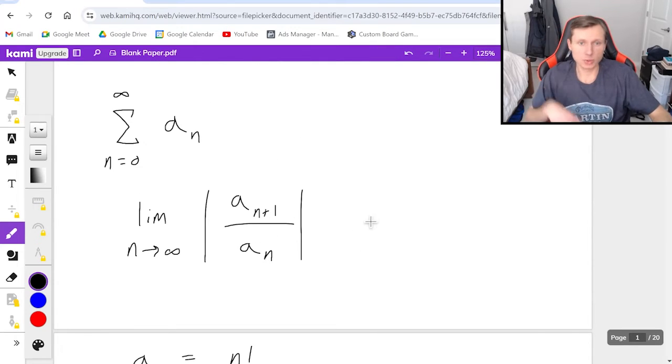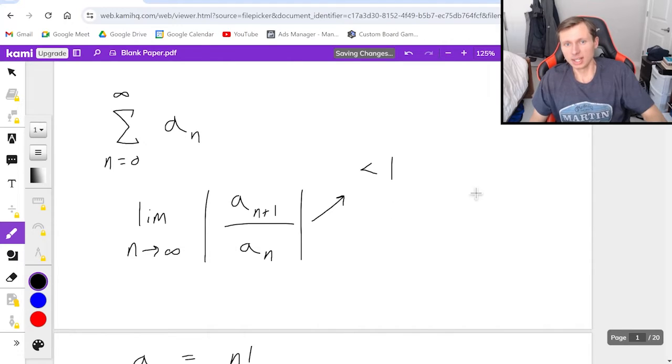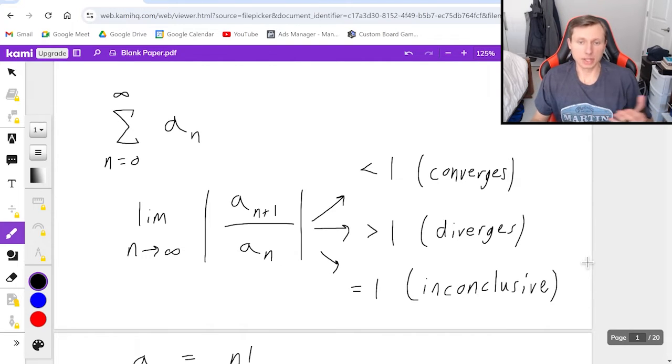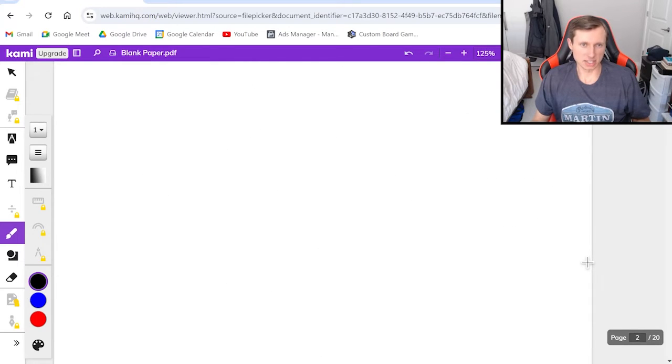There's three conclusions we can have. Number one, your result is less than 1. And if that's the case, then we say the series converges. Two, if you have greater than 1, this is when it diverges. And the third case we can have is it equals 1 exactly. And when this happens, it's inconclusive and you have to use another test. And that could be the integral test, could be the limit comparison test, could be the nth series test, could be the root test. There's a ton of different tests it could be, but ratio test will not work. So with that being said, let's look at some example problems.